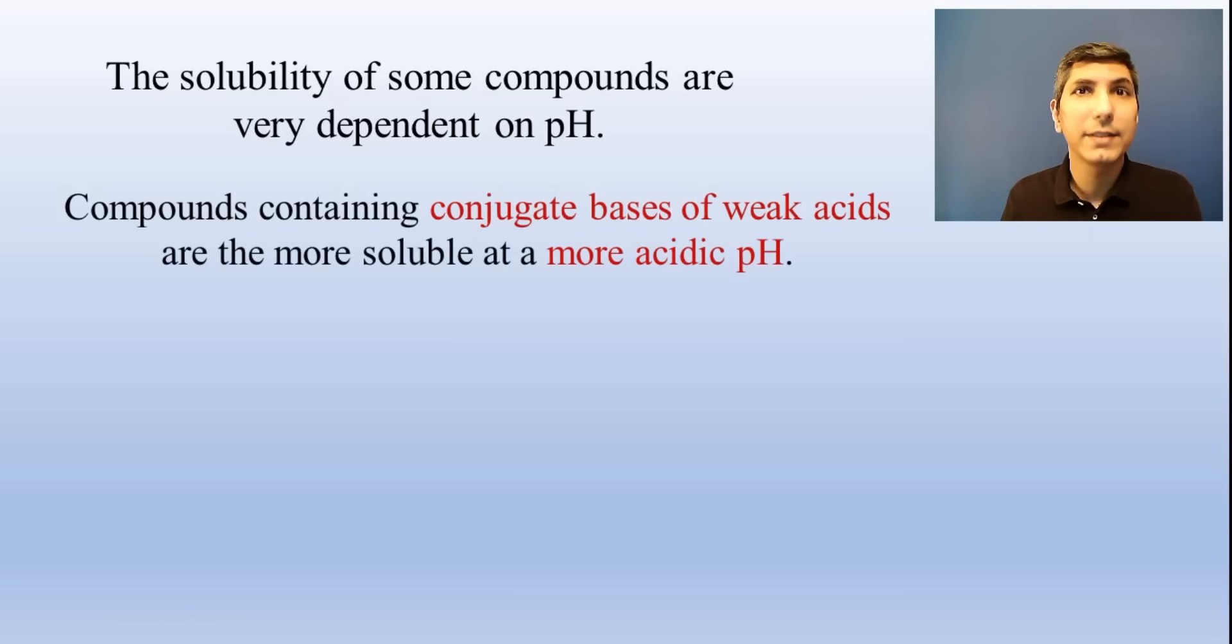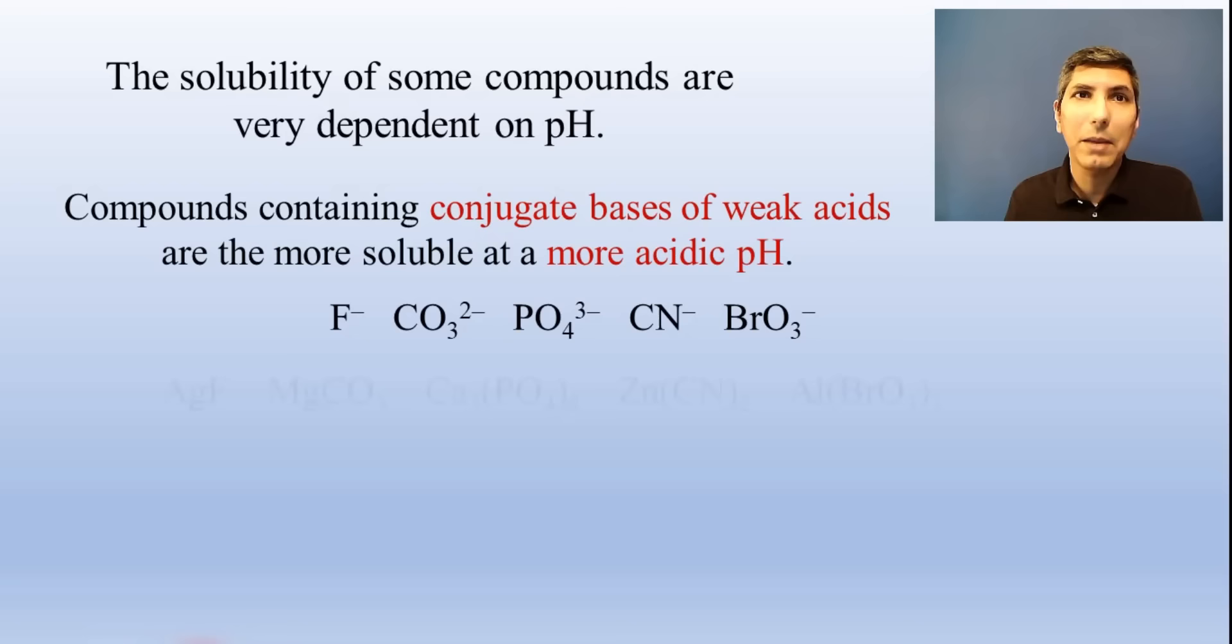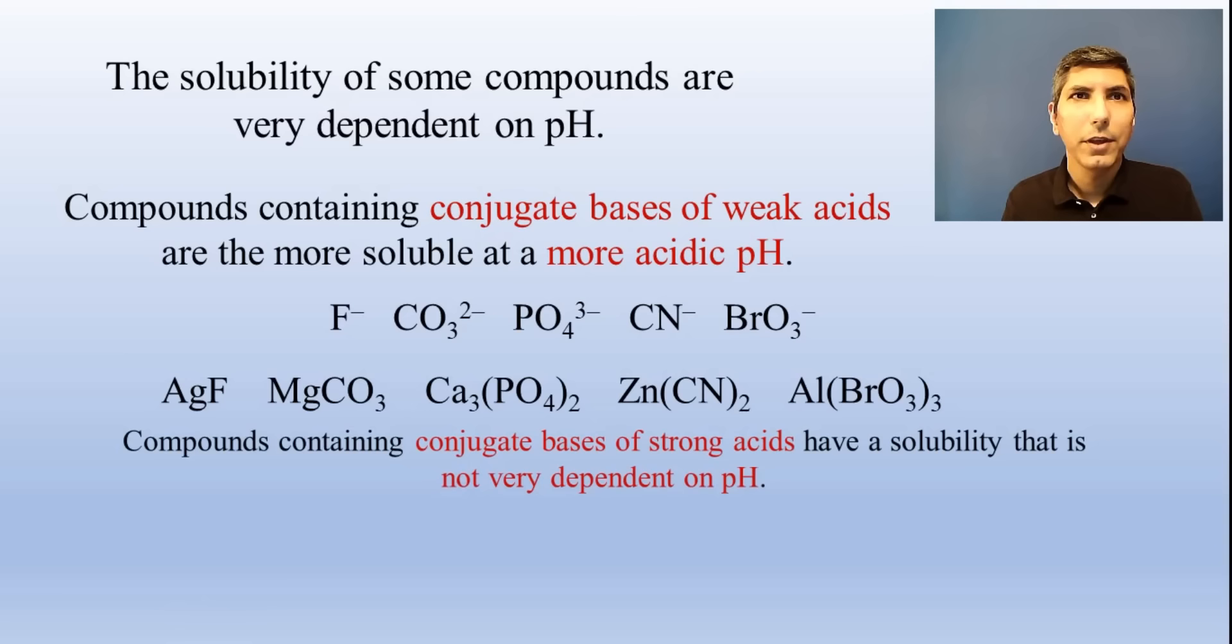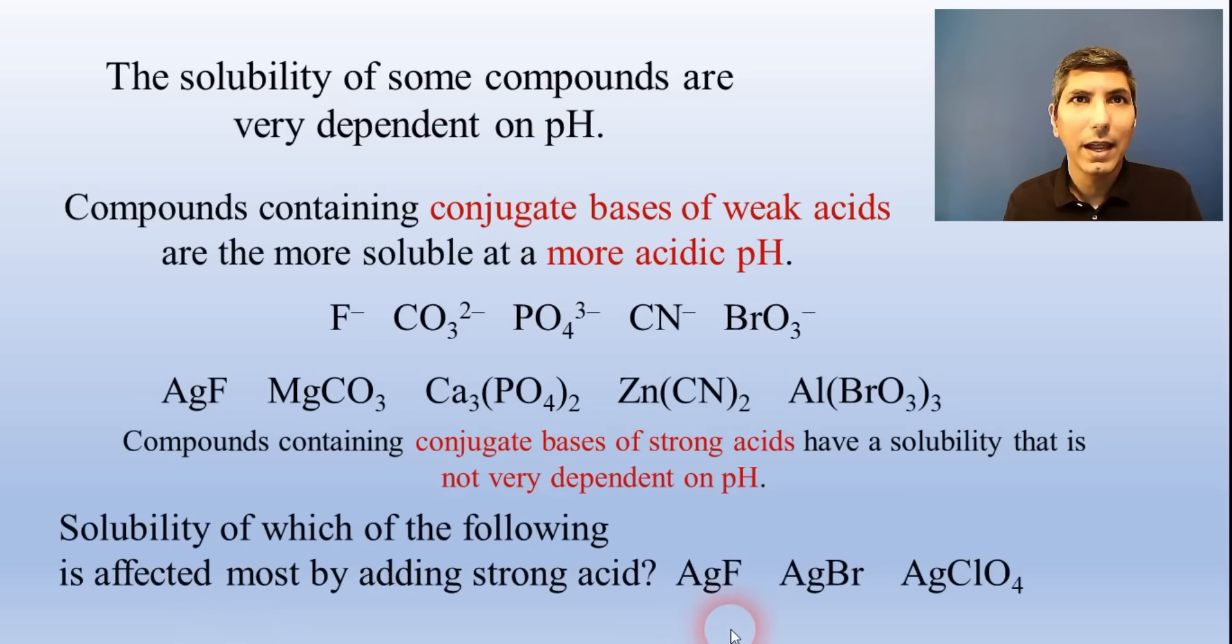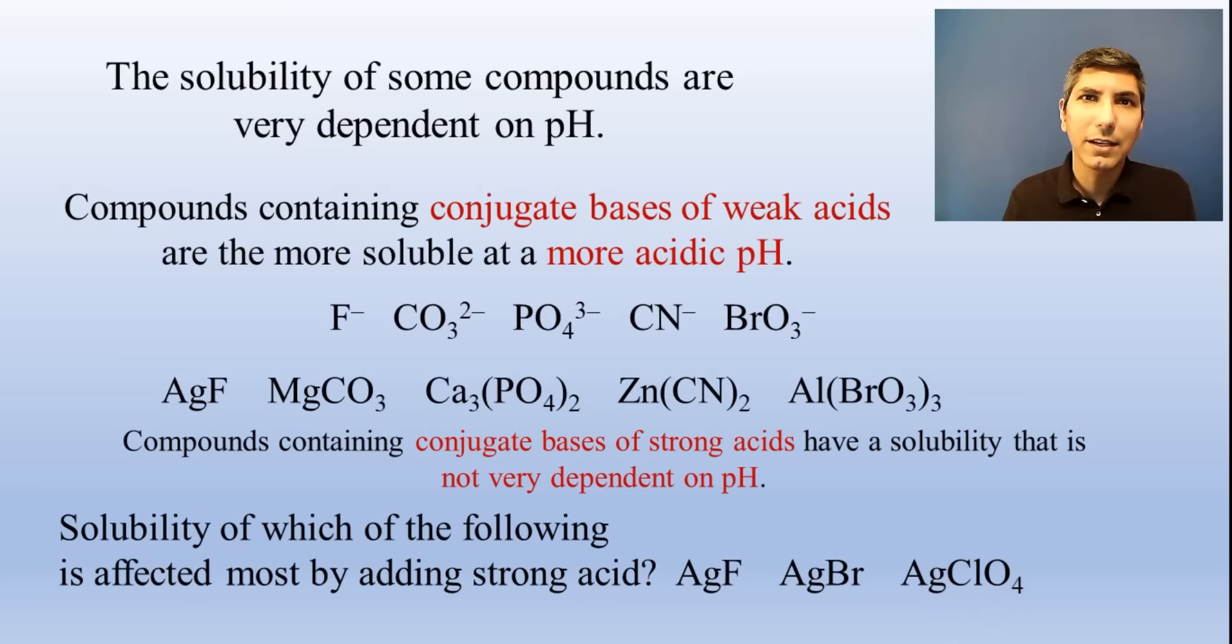The common ion effect can apply to pH as well. Usually this is applied to compounds that have an ion that is a weak base, such as fluoride, carbonate, phosphate, and so on. And when I say weak base, just to clarify, that's the conjugate base of a weak acid. The more acidic a solution gets, the more soluble compounds with these ions will be. So if we're asked a question where we have silver fluoride, silver bromide, and silver perchlorate, and we're asked which of these salts would be most affected by adding a strong acid, it would have to be the silver fluoride. Since bromide and perchlorate are conjugate bases of strong acids, their solubility won't be affected that much by adding acid. On the other hand, adding H plus to silver fluoride significantly increases its solubility.